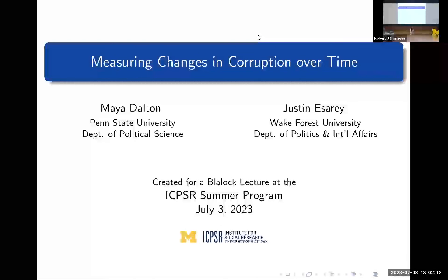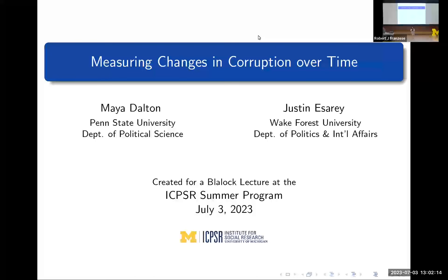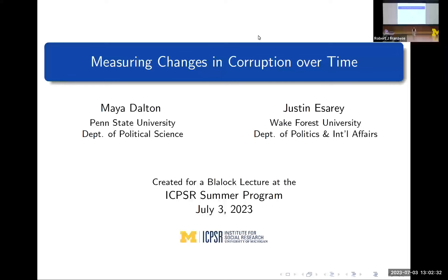Hello everyone. As Rob mentioned, my name is Maya Dalton, also as shown in the giant M to my left. I'm a second year graduate student at Penn State University. Our paper is titled 'Measuring Changes in Corruption Over Time' with my co-author Justin Essary. We appreciate any and all feedback on the project itself, and we're also looking to submit to journals in the near future, so any feedback on those journals would also be amazing.